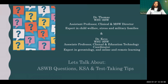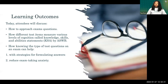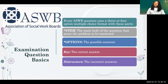Welcome everyone. Dr. Thomas will not be with us today as she had some family deaths. Today we'll talk about the licensure exam — how to approach questions, knowledge skills and abilities (KSA), strategies to formulate answers, and how to reduce test-taking anxiety. Every question on the licensure exam has three or four multiple choice options, and each question consists of the stem, the option, the key, and the distractor.